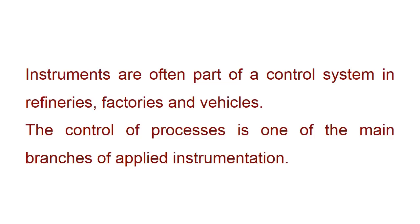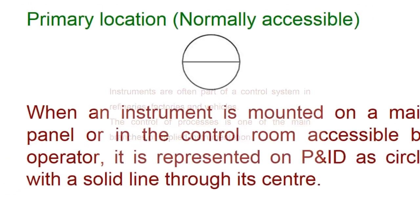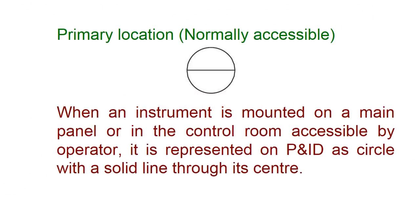Instruments are often part of the control system in refineries, factories, and vehicles. The control of processes is one of the main branches of applied instrumentation. When an instrument is mounted on a main panel or in the control room accessible by the operator, it is represented on the P&ID as a circle with a solid line through its center.